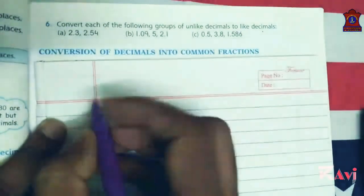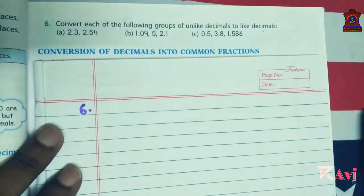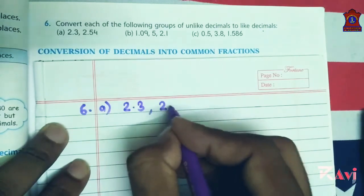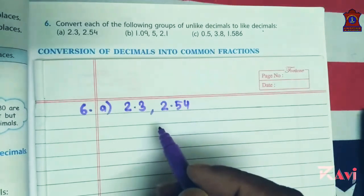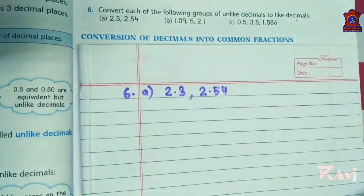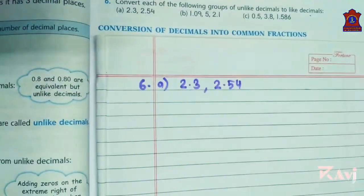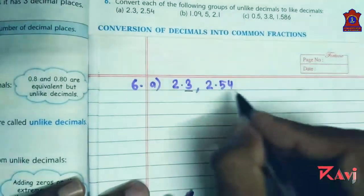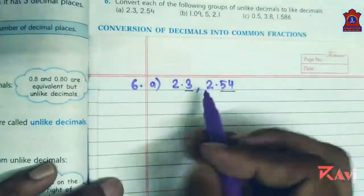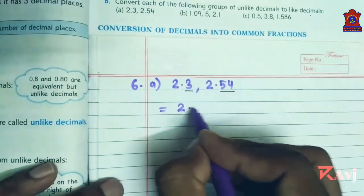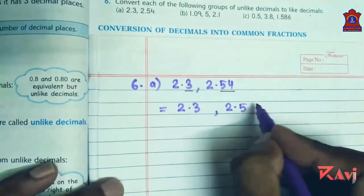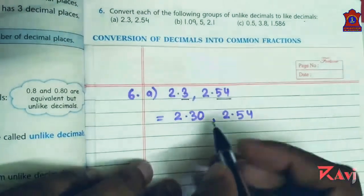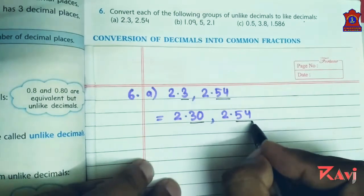Question number 6: convert each of the following groups of unlike decimals to like decimals. Take 2.3 and 2.54. Find the maximum number of decimal places — the first number has one decimal place, the second has two. To make them like, add a zero to the first: 2.30 and 2.54. Now both are like decimals.